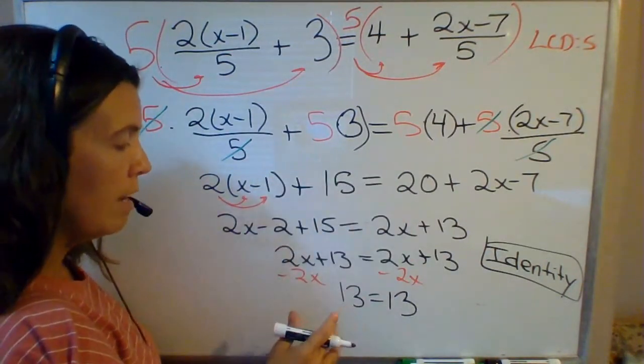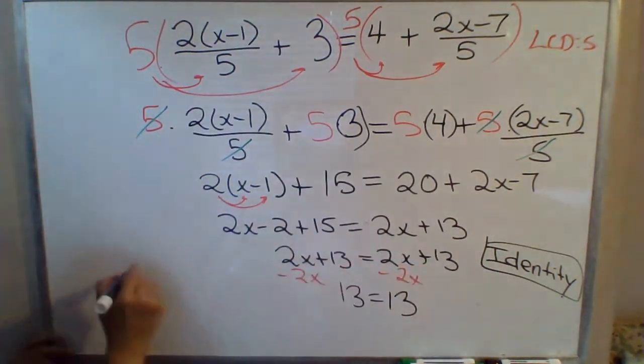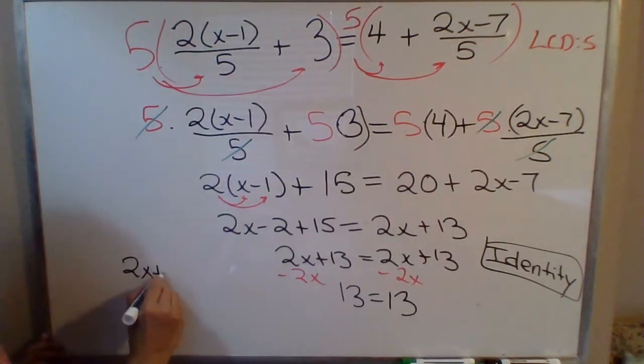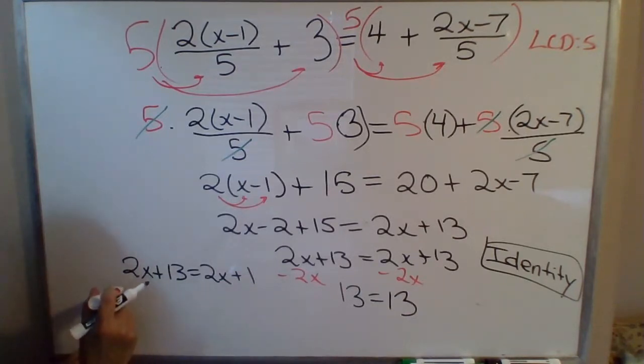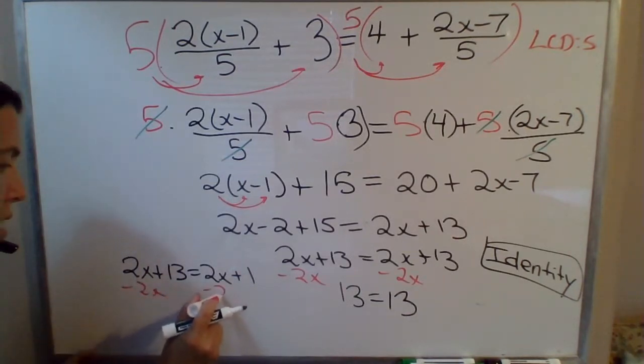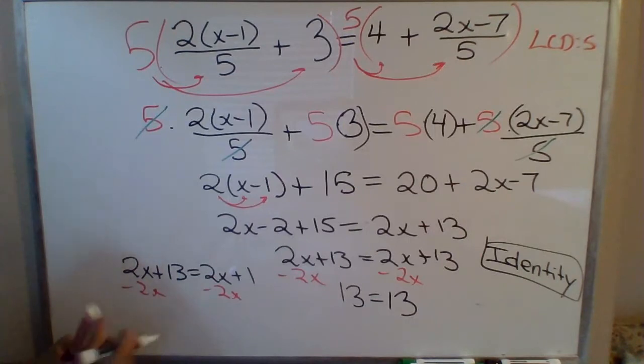By the way, if this had played out differently - suppose we got to this last step and instead of 2x plus 13 equals 2x plus 13, let's say we had 2x plus 13 equals 2x plus 1. Well then again, if you had your head down just trying to combine your like terms, get your variables together, you do minus 2x to both sides, the x's are gone and you end up with a false statement: 13 equals 1.